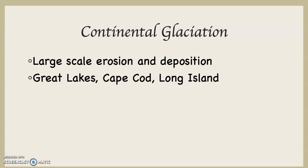Some very famous landforms in our country have been created by continental glaciation. The Great Lakes — Superior, Michigan, Huron, Erie, and Ontario — were all the result of continental glaciation. The famous Cape Cod, that weird hook that hangs off the eastern side of Massachusetts and sticks into the North Atlantic, is the result of continental glaciation. Long Island, right next to New York City, is also the result of continental glaciation.